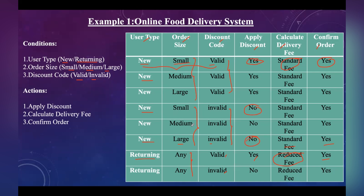Decision table testing is particularly useful for complex systems where multiple inputs affect the output. As you can see, for a returning user with any order size, if the code is valid the answer is different than if the code is invalid — the input type clearly affects the output.